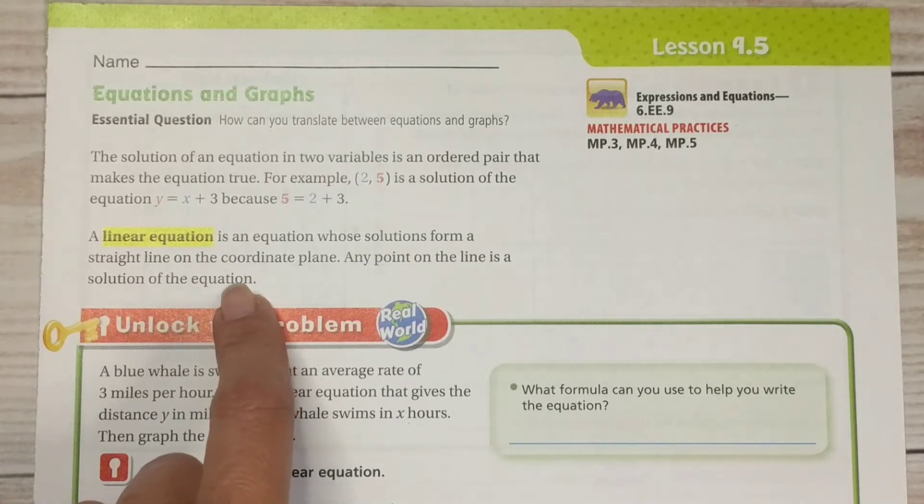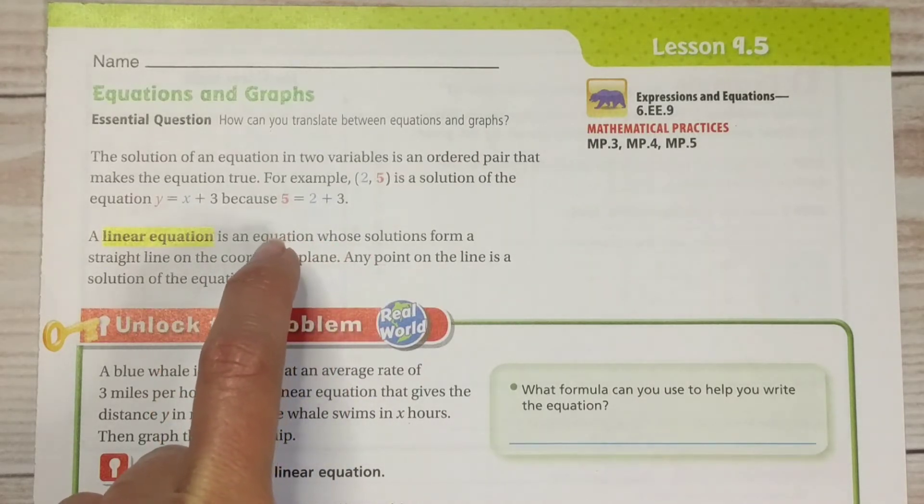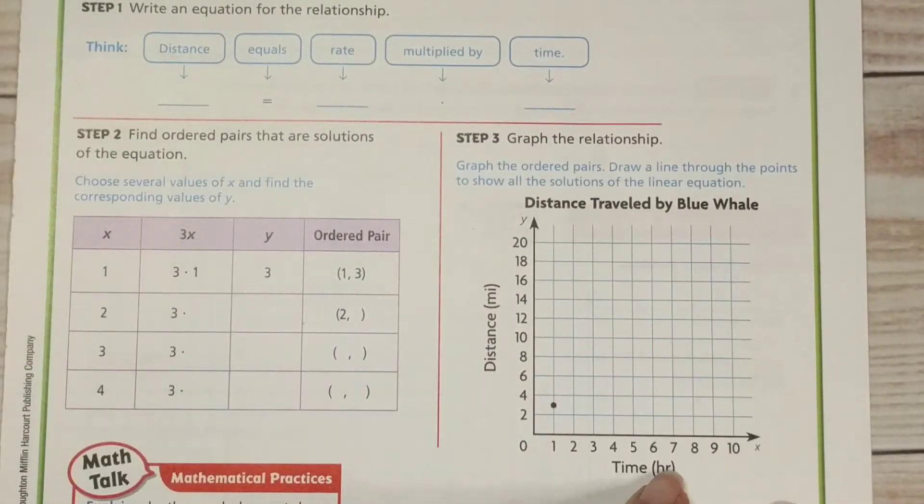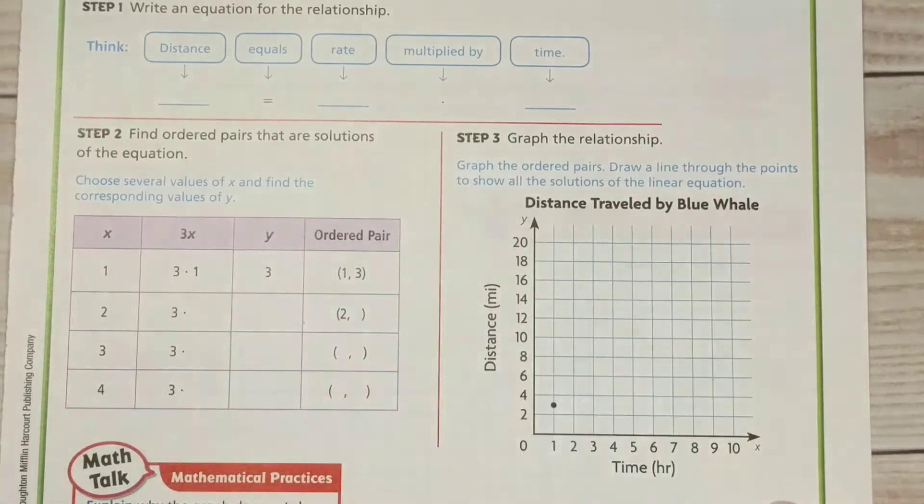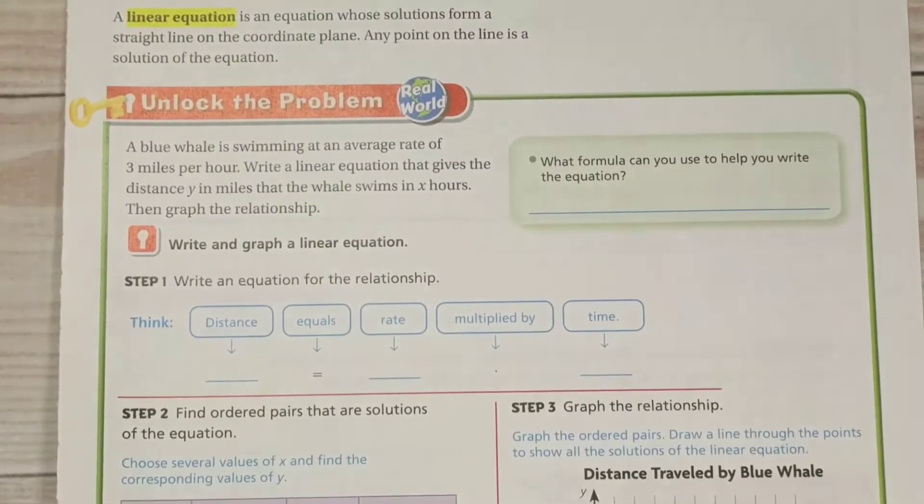So when you're done solving the equation and finding some solutions and you graph them, you're going to find that they're going to make a line, a straight line on the graph. All right, let's go to the first question here.